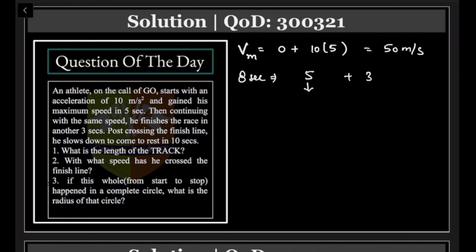The displacement covered in 5 seconds will be s = ut + (1/2)·10·t² = 125 meters, whereas the displacement covered in the last 3 seconds with no acceleration...